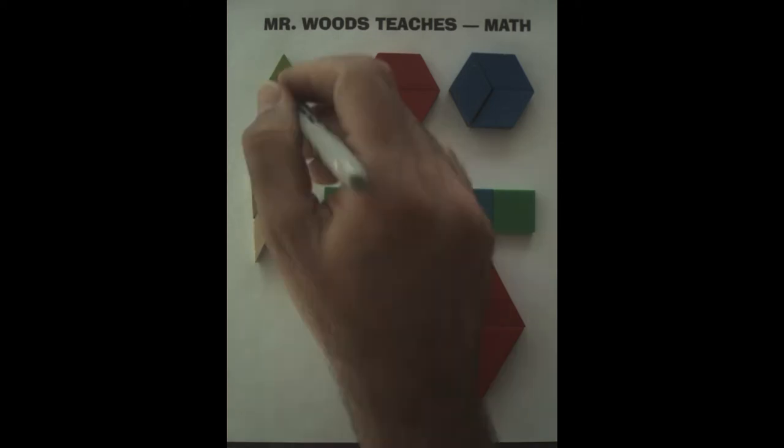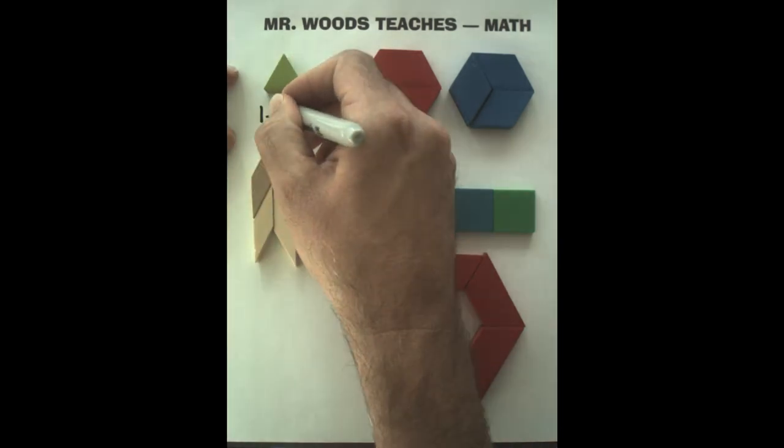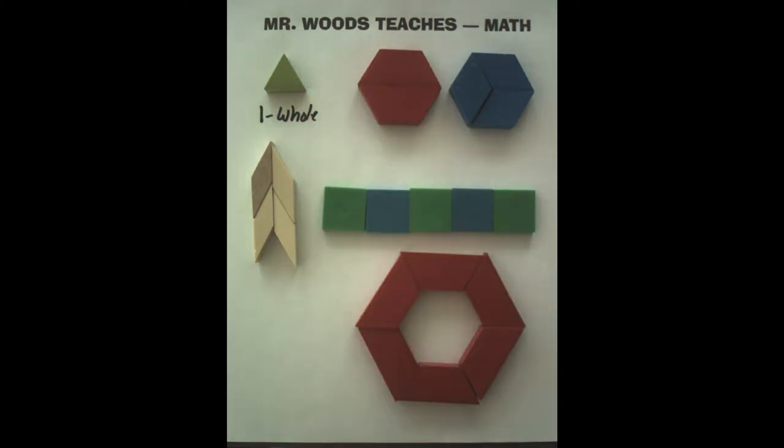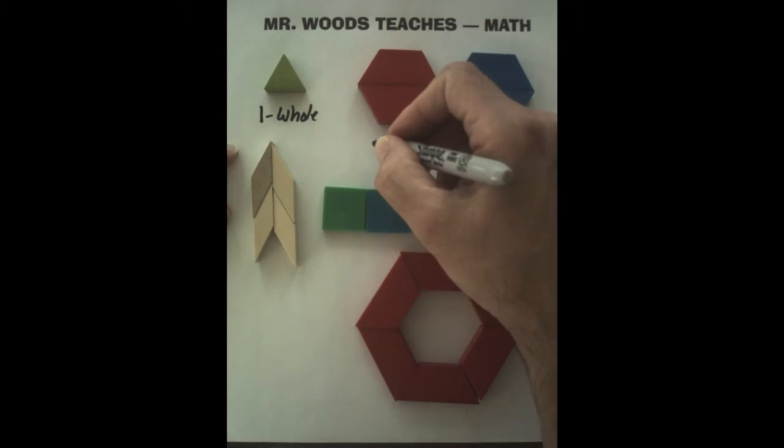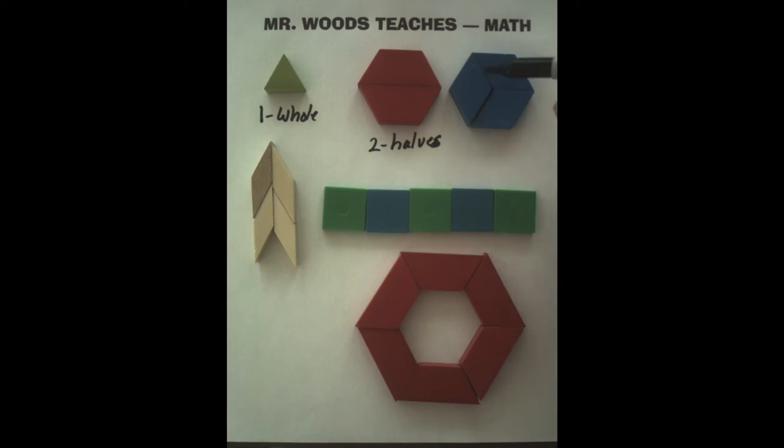Here we have one piece, and so that's just one whole piece. Here we have two trapezoids, so that's two halves. We have a hexagon here as well, and it has one, two, three, so we have three thirds.